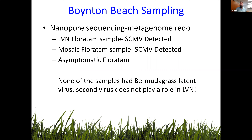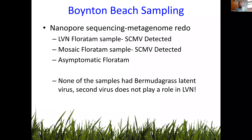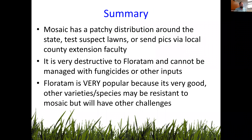We had additional questions about whether a second virus was involved. We did nanopore sequencing and initially found a Bermudagrass latent virus in some samples, but it was later confirmed as contamination from Bermudagrass also infected with sugarcane mosaic virus. Additional research confirmed that Bermudagrass latent virus does not play a role in LVN — all we need is sugarcane mosaic virus and the Floratam genotype to see death of Floratam lawns. To summarize: mosaic has a patchy distribution around the state, while LVN is confirmed in southern parts. When we suspect mosaic or LVN, test the lawns through the diagnostic clinic.